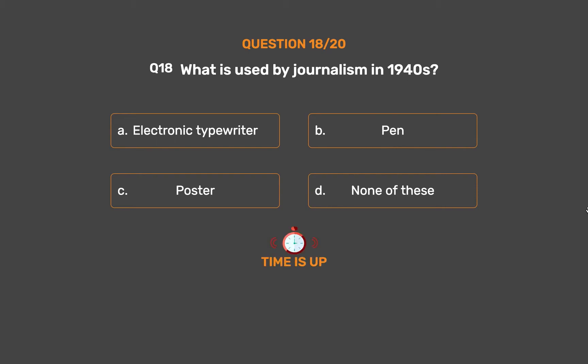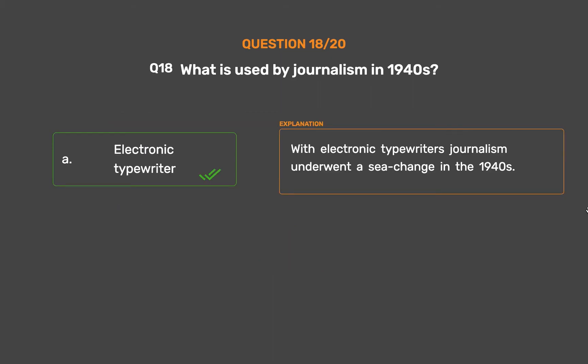The correct answer is Option A: Electronic typewriter. With electronic typewriters, journalism underwent a sea change in the 1940s.